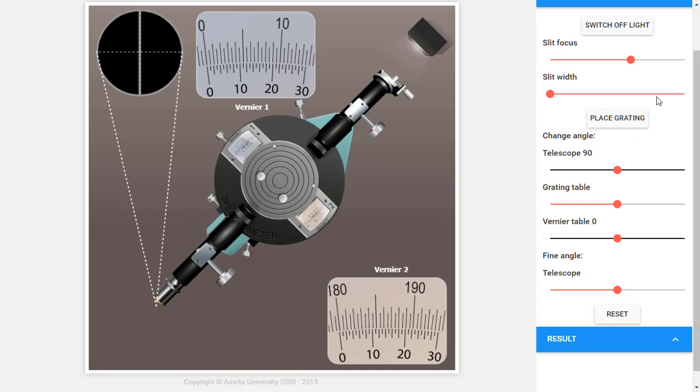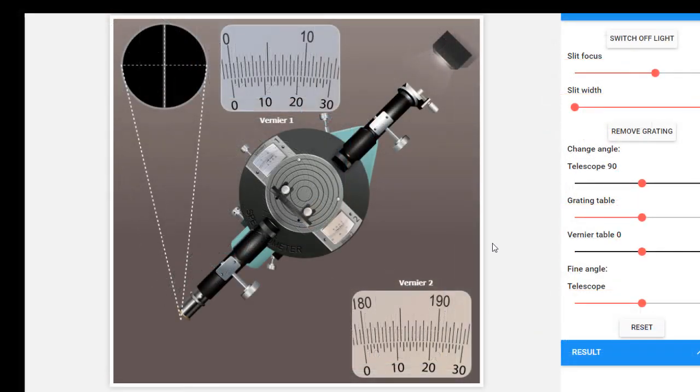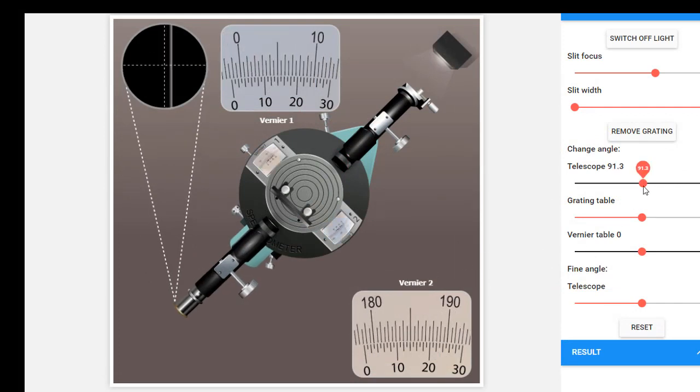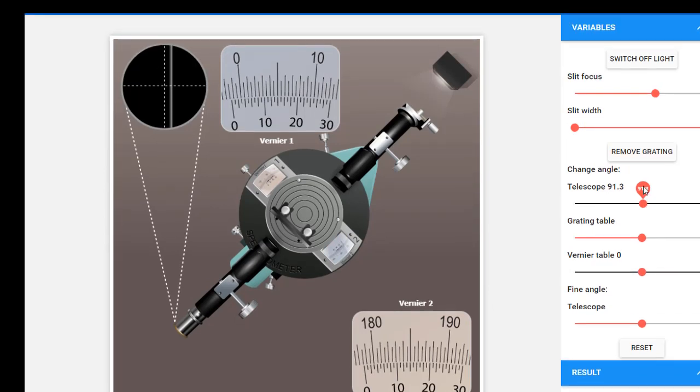We have a bunch of parameters that we can play with. Let's place the diffraction grating. Use the grating. We now change the angle of the telescope relative to the grating. And we should see the diffraction pattern on both the sides.